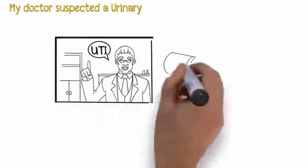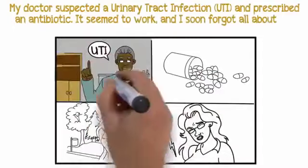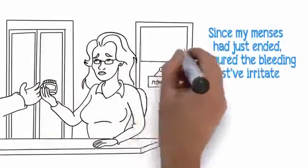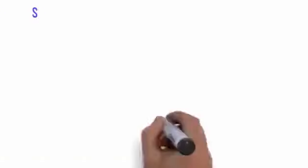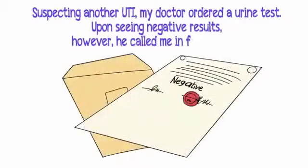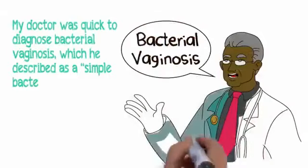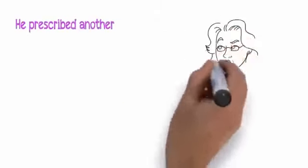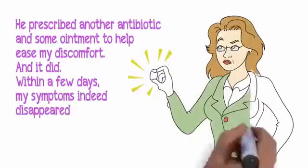My doctor suspected a urinary tract infection, UTI, and prescribed an antibiotic. It seemed to work and I soon forgot all about the incident until a few weeks later it recurred. Since my menses had just ended, I figured the bleeding must have irritated the skin. I used some soothing creams to ease discomfort, but my symptoms continued to worsen by the day. Worse yet, the pain was becoming excruciating when I peed. Suspecting another UTI, my doctor ordered a urine test. Upon seeing negative results, however, he called me in for an exam. My doctor was quick to diagnose bacterial vaginosis, which he described as a simple bacterial infection that should go away in a few days. He prescribed another antibiotic and some ointment to help ease my discomfort, and it did. Within a few days, my symptoms indeed disappeared and I resumed a normal life.